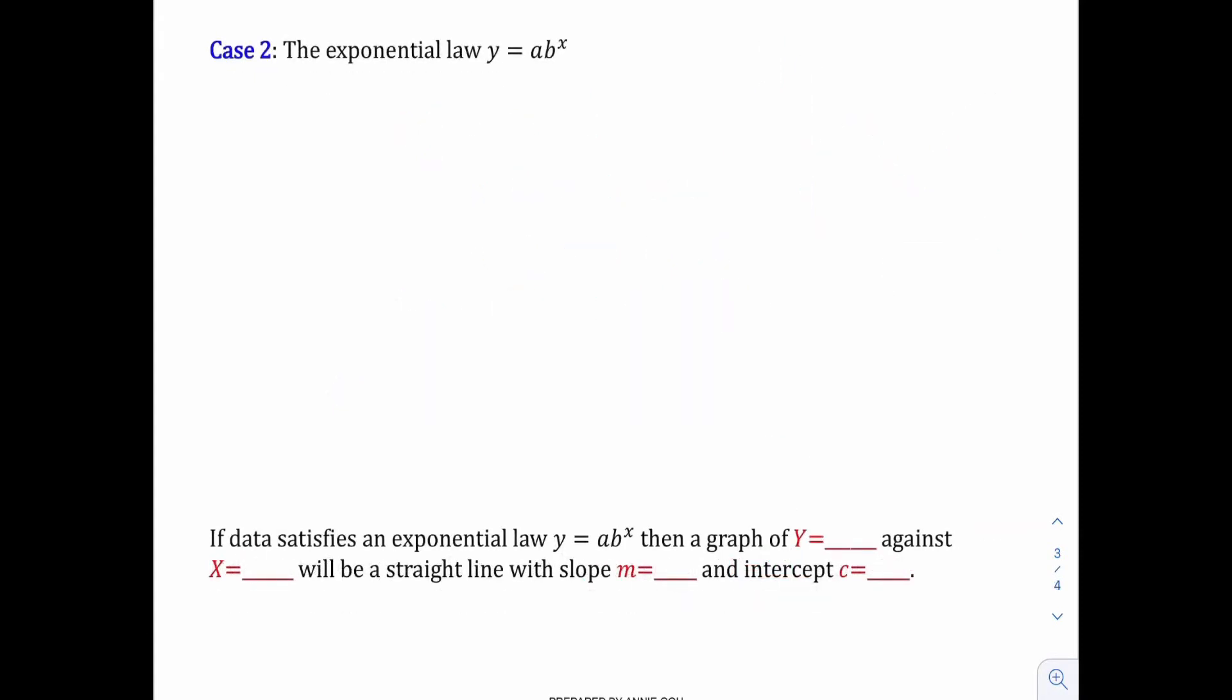Now, let's have a look at the second relationship, the exponential law: y equals a b power x. How are we supposed to change this relationship into linear form? The method is the same - it's either you log both sides or you ln both sides. Alright, so for this example, I'm going to log both sides. The lg symbol means the log with base ten. Okay, so the next step is just to separate the a and the b power x. And then, the x here you should bring down. It becomes x log b plus log a.